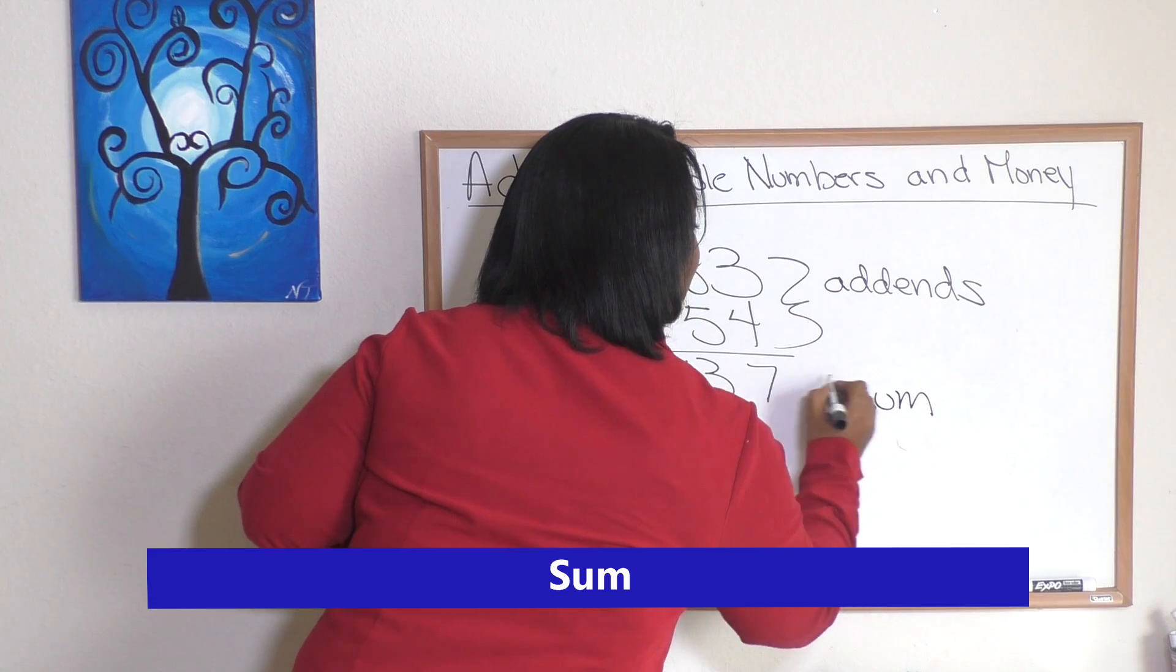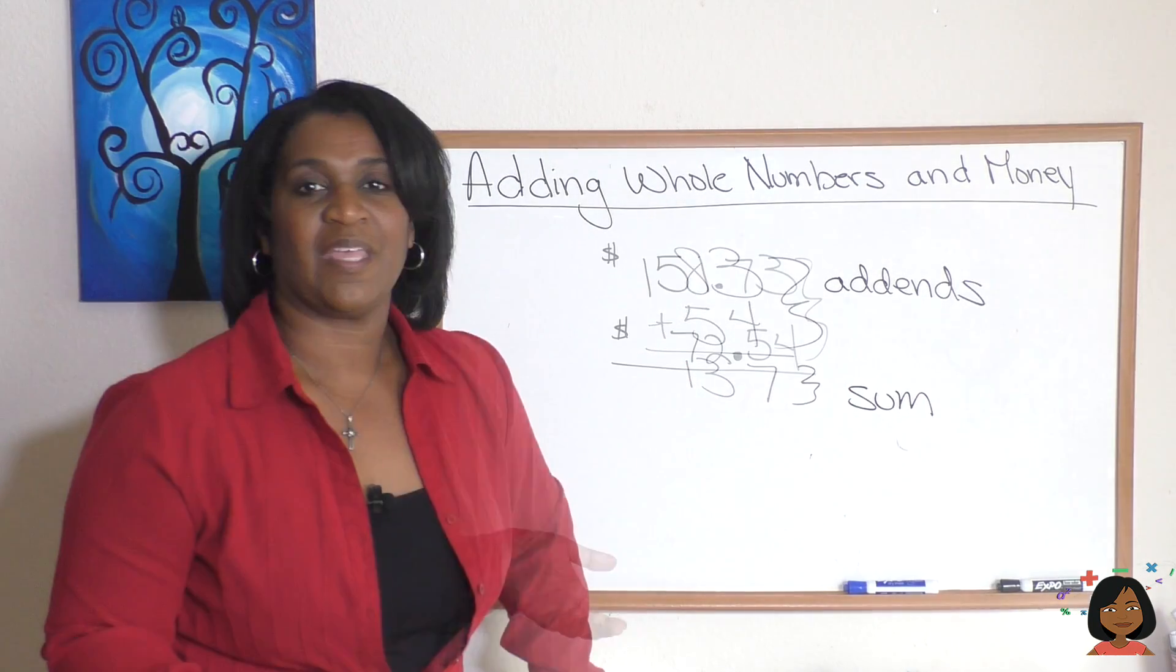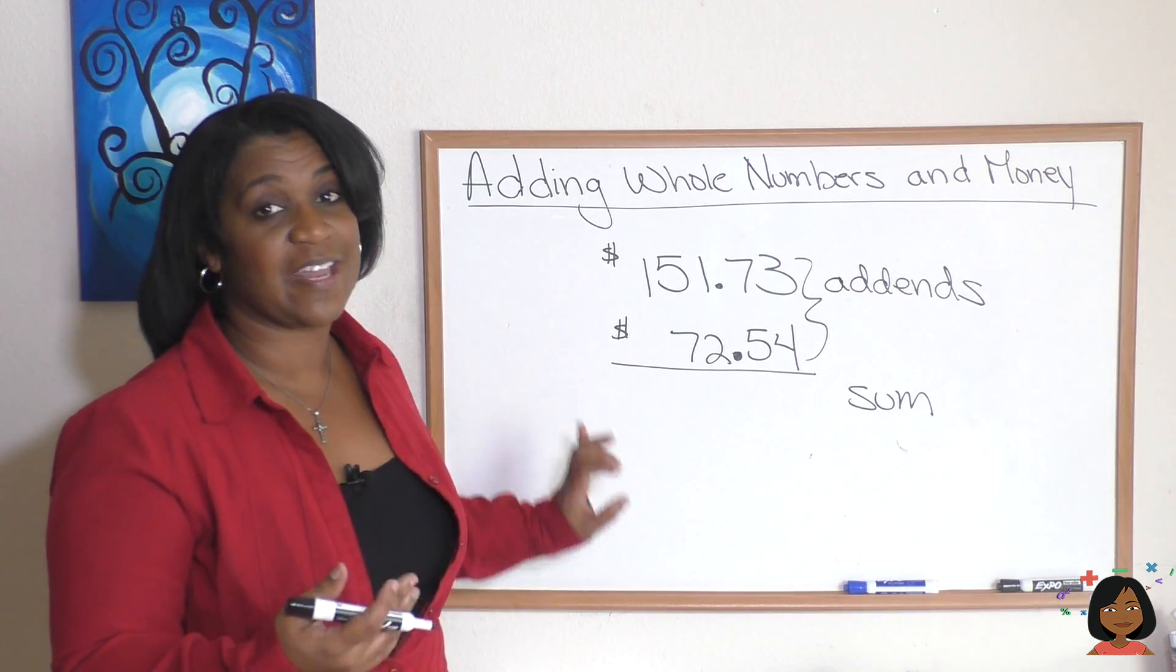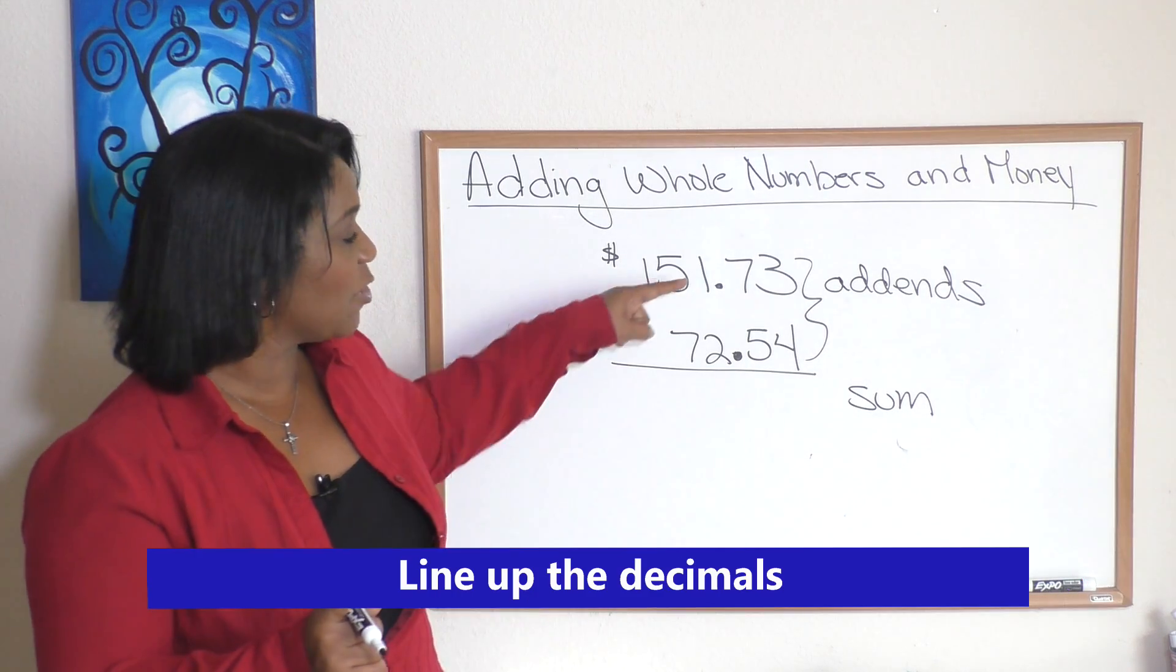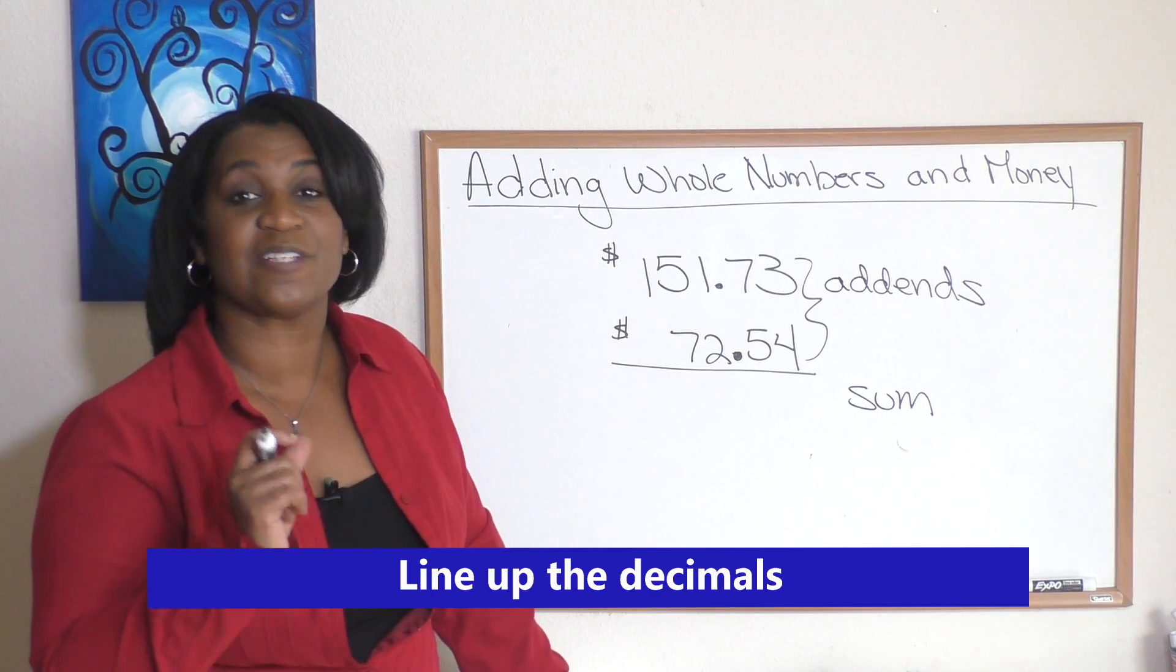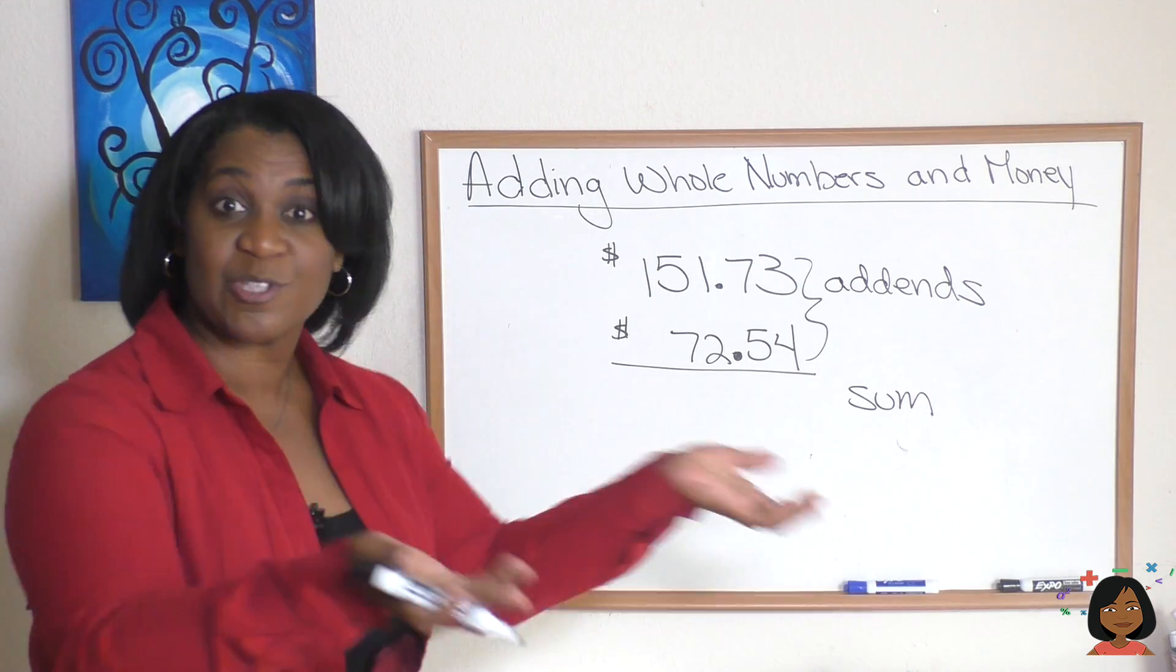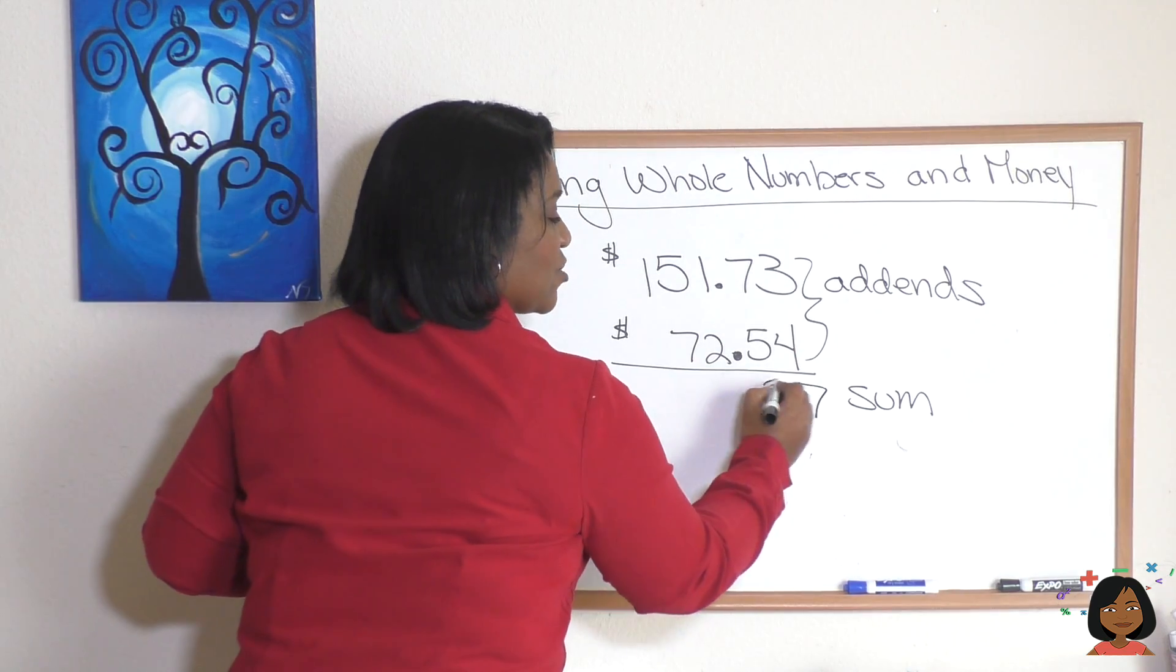Now when we're adding money we still call these our addends and our sum, but the one thing that's different about adding money is we want to make sure that we always line up our decimal points and then we add. So now here I've lined up my decimal points for you so I'm ready to add. Three and four is seven, seven and five is twelve.